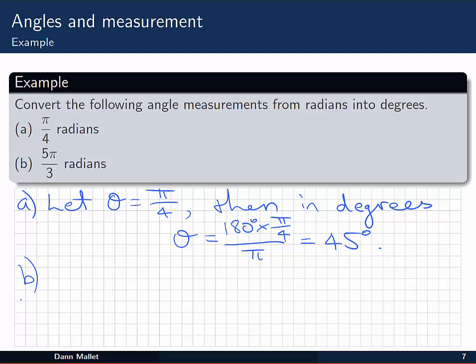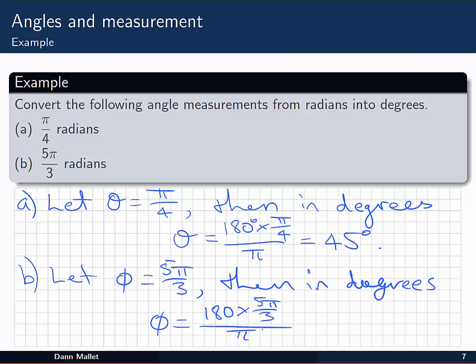Okay, so same thing again for part b. If I let, this time I'll call it phi, 5π on 3, then in degrees, phi will be equal to 180 multiplied by 5π on 3 divided by π. Again, the π's will cancel. 180 on 3 will leave me 60. 60 times 5 is 300. So we have 300 degrees.